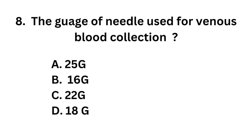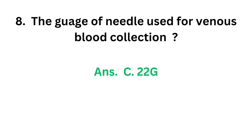Question number 8. The gauge of needle used for venous blood collection in adults — this question was not complete, sorry for the mistake. The gauge of needle used for venous blood collection in adults: Option A: 25 gauge. Option B: 16 gauge. Option C: 22 gauge. Option D: 18 gauge. The correct answer is option C, 22 gauge. A 22 gauge needle is used for blood collection in adults.